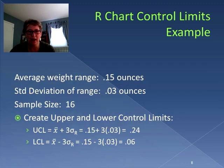The average weight range is 0.15 ounces and the standard deviation of that range is 0.03, and our sample size is 16. So we're going to create our upper and lower control limits. So it's 0.15 plus 3 times 0.03, which is 0.24, and the lower control limit is 0.15 minus 3 times 0.03, which is 0.06.